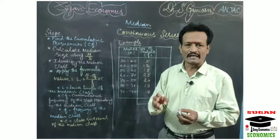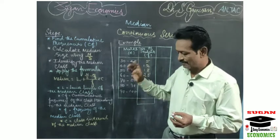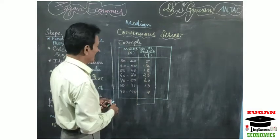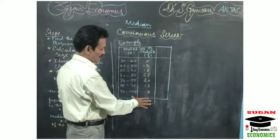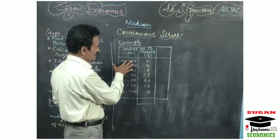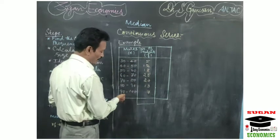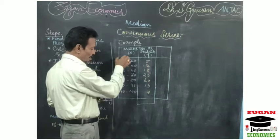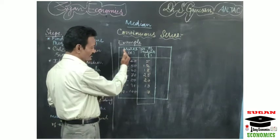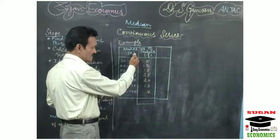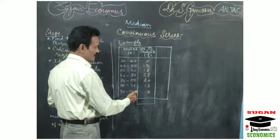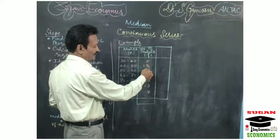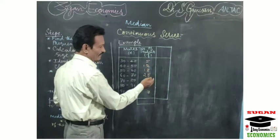Now I will explain how to calculate median with the help of an example. The example sum is given with marks and number of students. The marks are ranging from 30 to 40, 40 to 50, 50 to 60, up to 90 to 100. In a continuous series, the left hand side values are the lower limits and the right hand side values are the upper limits. The frequencies are 5, 12, 18, 25, 20, 13, and 7.